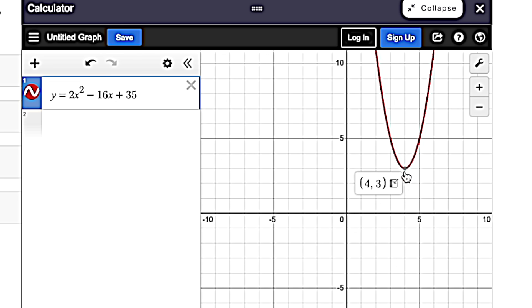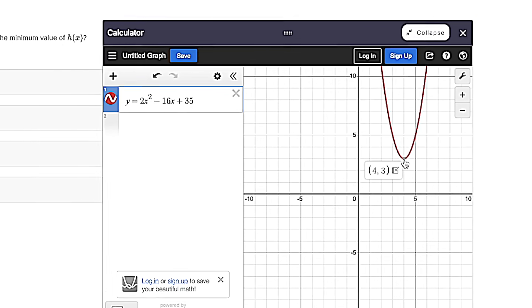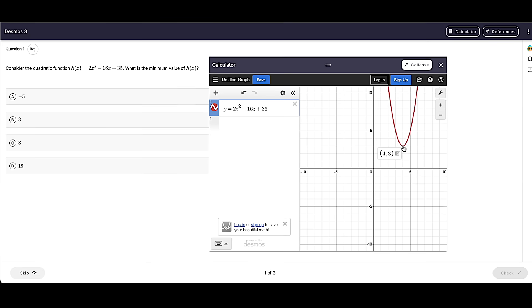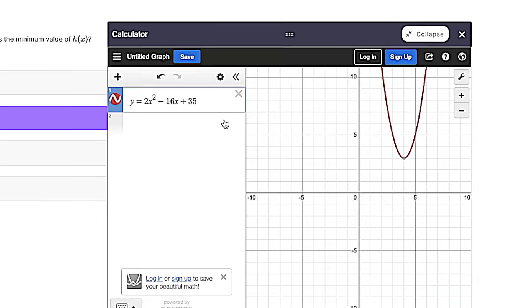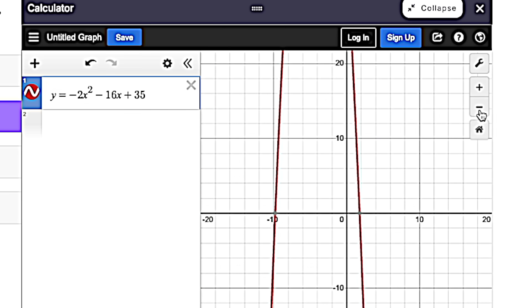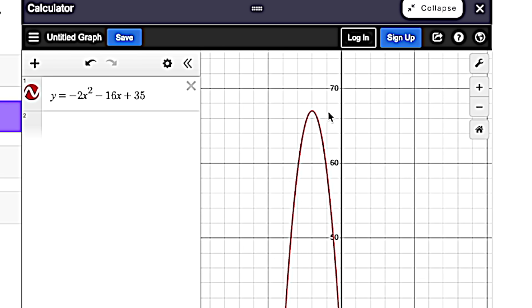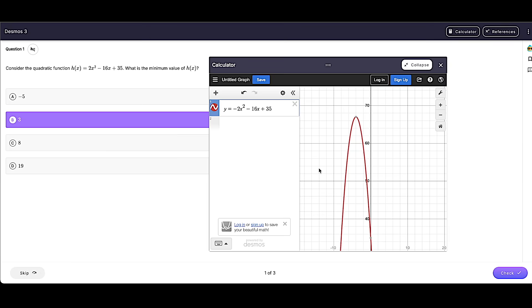And then a minimum or a maximum is going to be the y value of the vertex, because as you can see, it's never going to go below this point. So this is the minimum y value. In this case, three. If it were an upside down parabola, then instead we would have a maximum. It would never go above 67. So that's minimum and maximum.